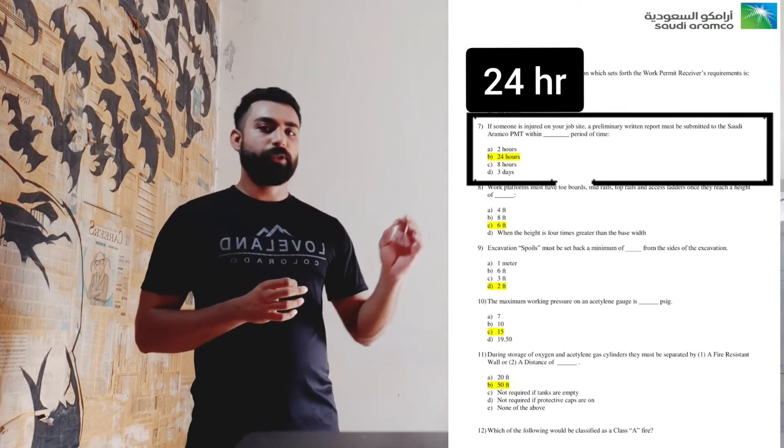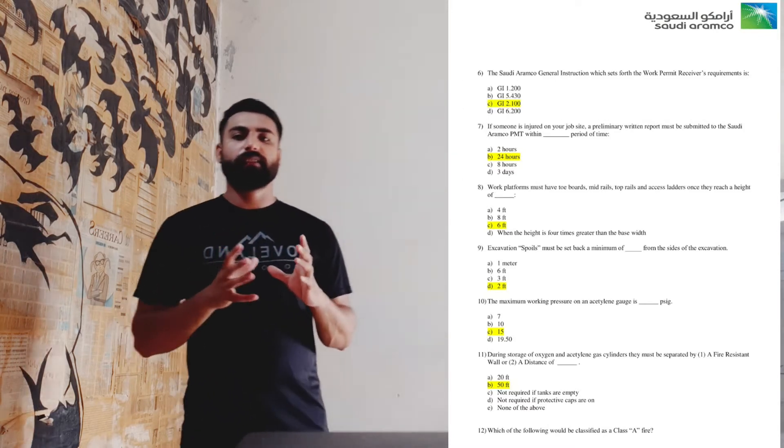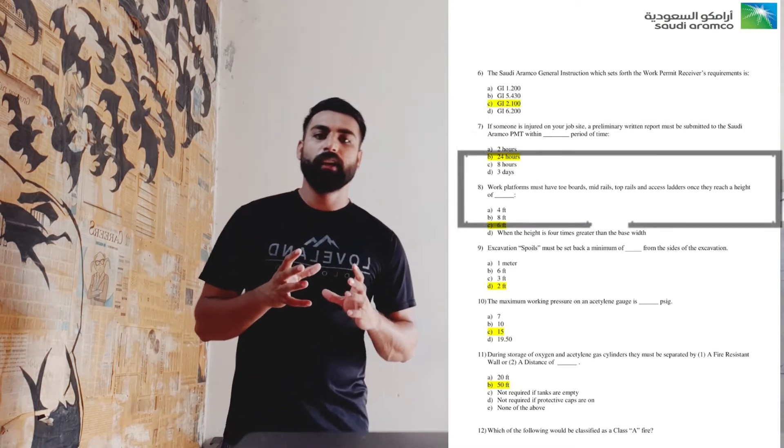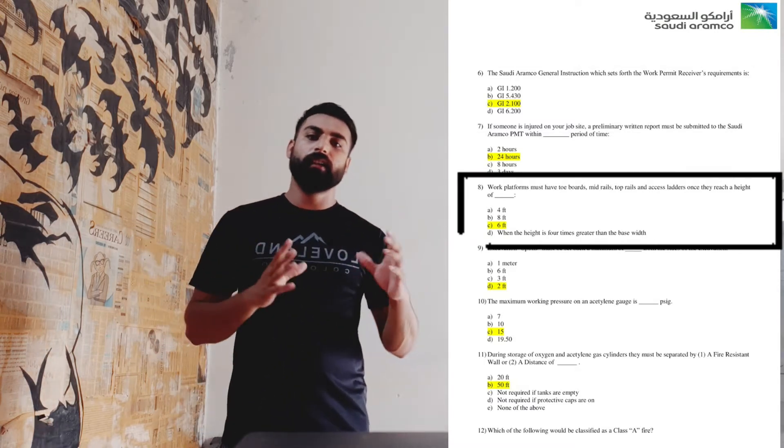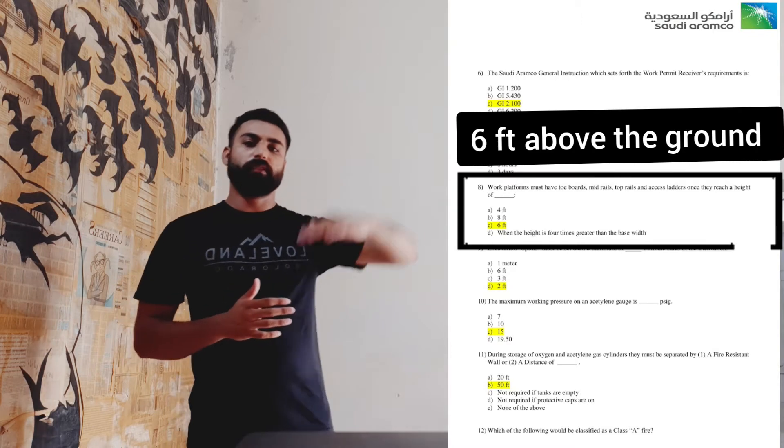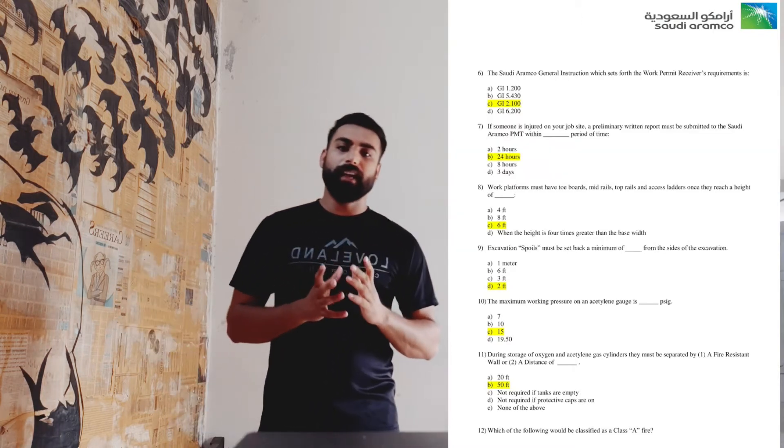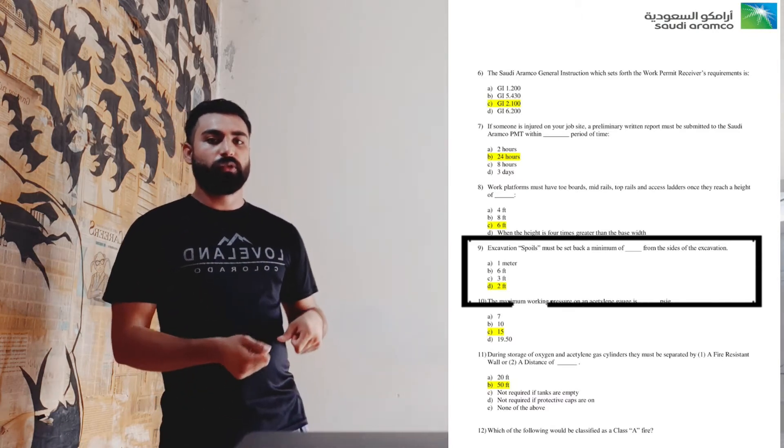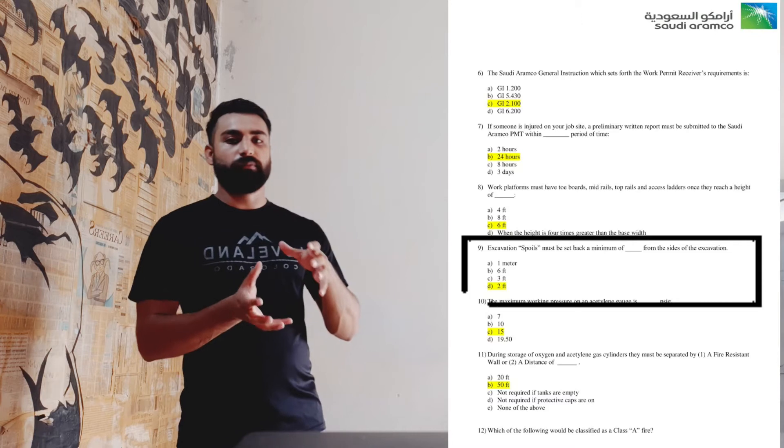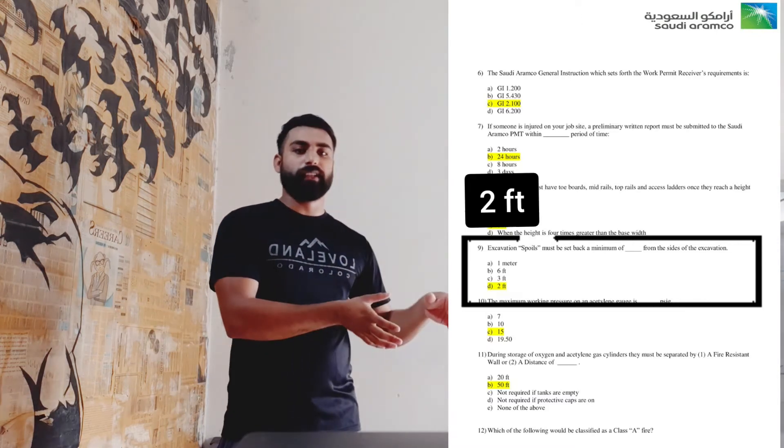Whenever there happens any kind of injury, this is followed globally. Whenever there is any kind of injury, it should be reported within 24 hours. Question number eight is again regarding the scaffolding. It asks when we should be having the toe board guard railing system on the platform. It is when it moves six feet above the ground level. Question number nine is about excavation. Whenever we do excavation, there is some extra material known as spoils. Spoils should be placed at least two feet away from the excavation.